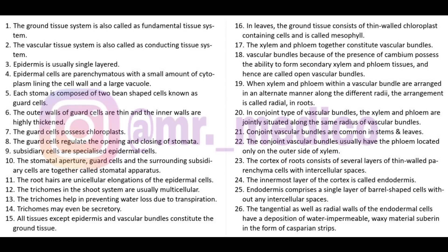The xylem and phloem together constitute the vascular bundle. Vascular bundles with cambium possess the ability to form secondary xylem or secondary phloem. Within a vascular bundle, when xylem and phloem are arranged alternately along different radii, they are called radial.